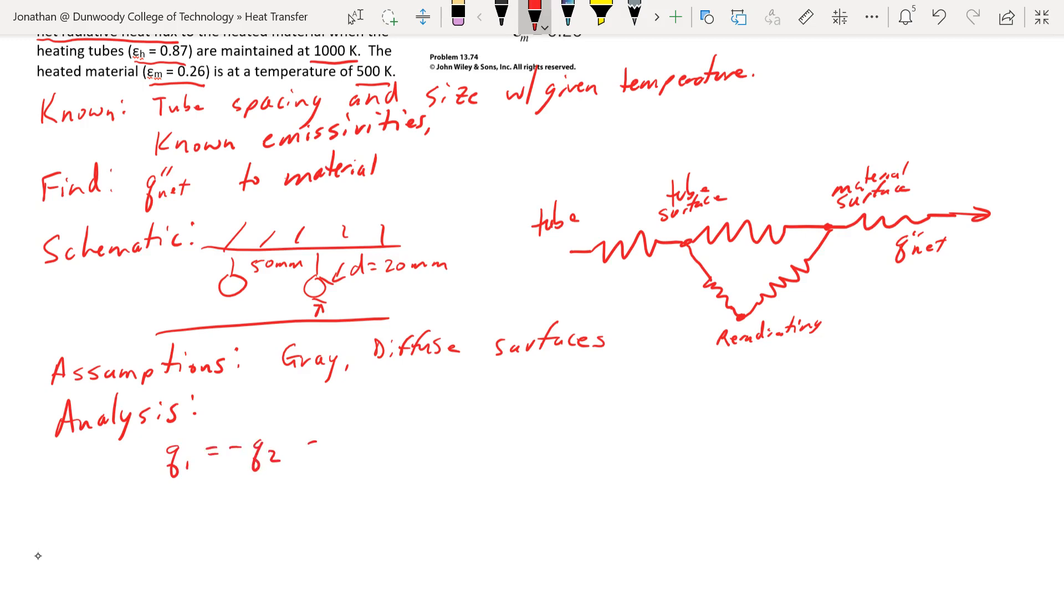Looking back in our text, we have Q1 for a two surface enclosure equals negative Q2 is going to be sigma T1 to the fourth minus T2 to the fourth, so black body emission over our resistances: 1 minus epsilon 1 over epsilon 1 A1 plus 1 over A1 F12 plus 1 minus epsilon 2 over epsilon 2 A2.